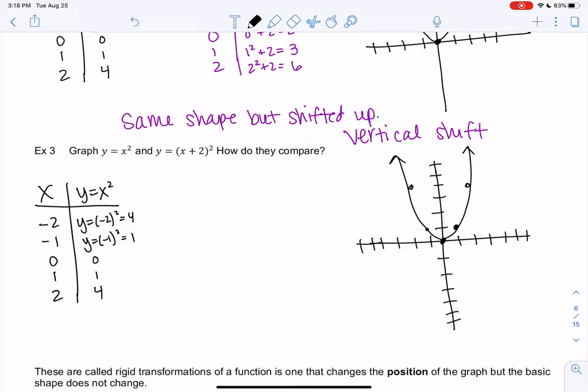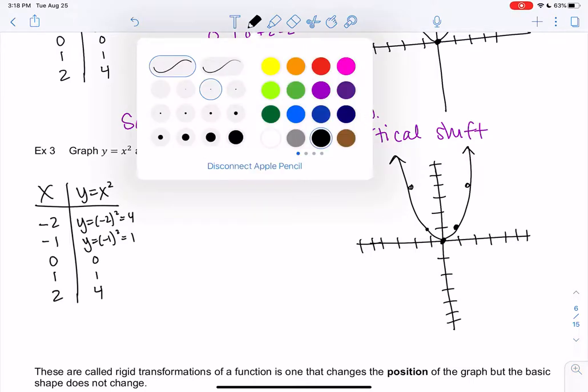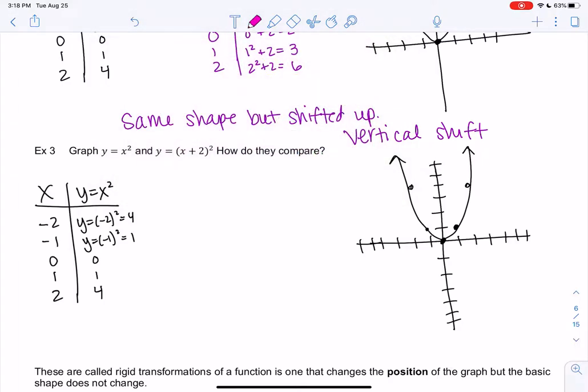That's a nice, it's called a parent function, which we'll talk about later. But we want to be familiar with these, like, base functions. But x plus 2 squared, we might not be as familiar with. So let's just plug in the same numbers. So negative 2 plus 2 squared in parentheses. So we're going to add first. So we get 0 squared or 0. So negative 2 and 0.